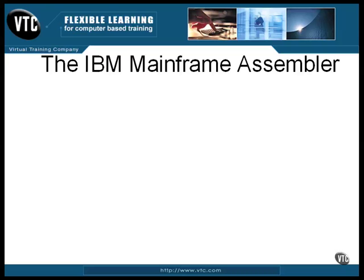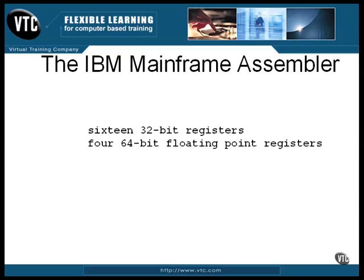The IBM mainframe assembly language is quite different because the architecture of the CPU is different. It has 16 general-purpose 32-bit registers, identified by the numbers 0 through 15, and it has four 64-bit floating-point registers.